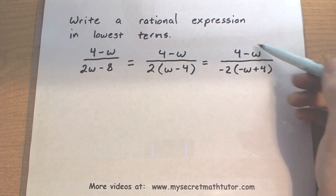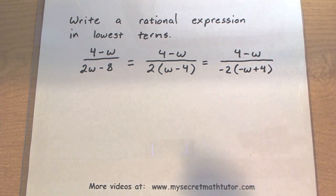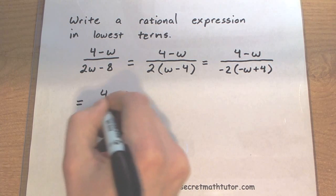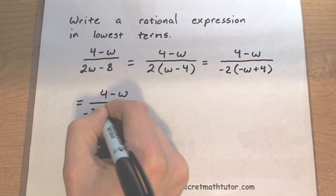But now I have this minus w and a positive 4 just like the top. In fact, I'm going to go ahead and take that bottom and just reverse the order that it's written.